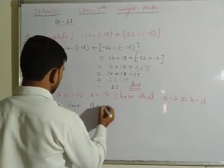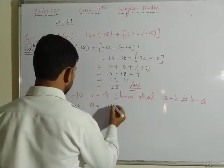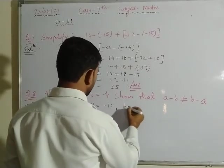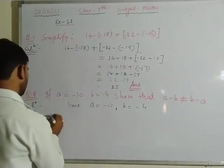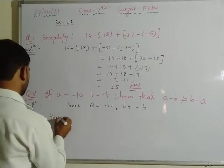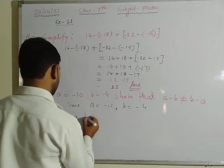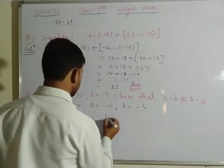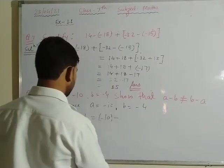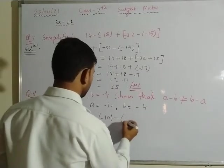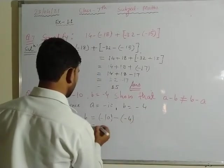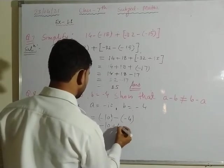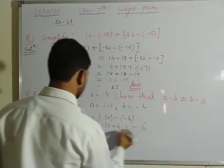Since a equals minus 10 and b equals minus 4. Then a minus b equals minus 10 minus minus 4. Applying sign rule: minus minus gives plus, so a minus b equals minus 10 plus 4 equals minus 6.